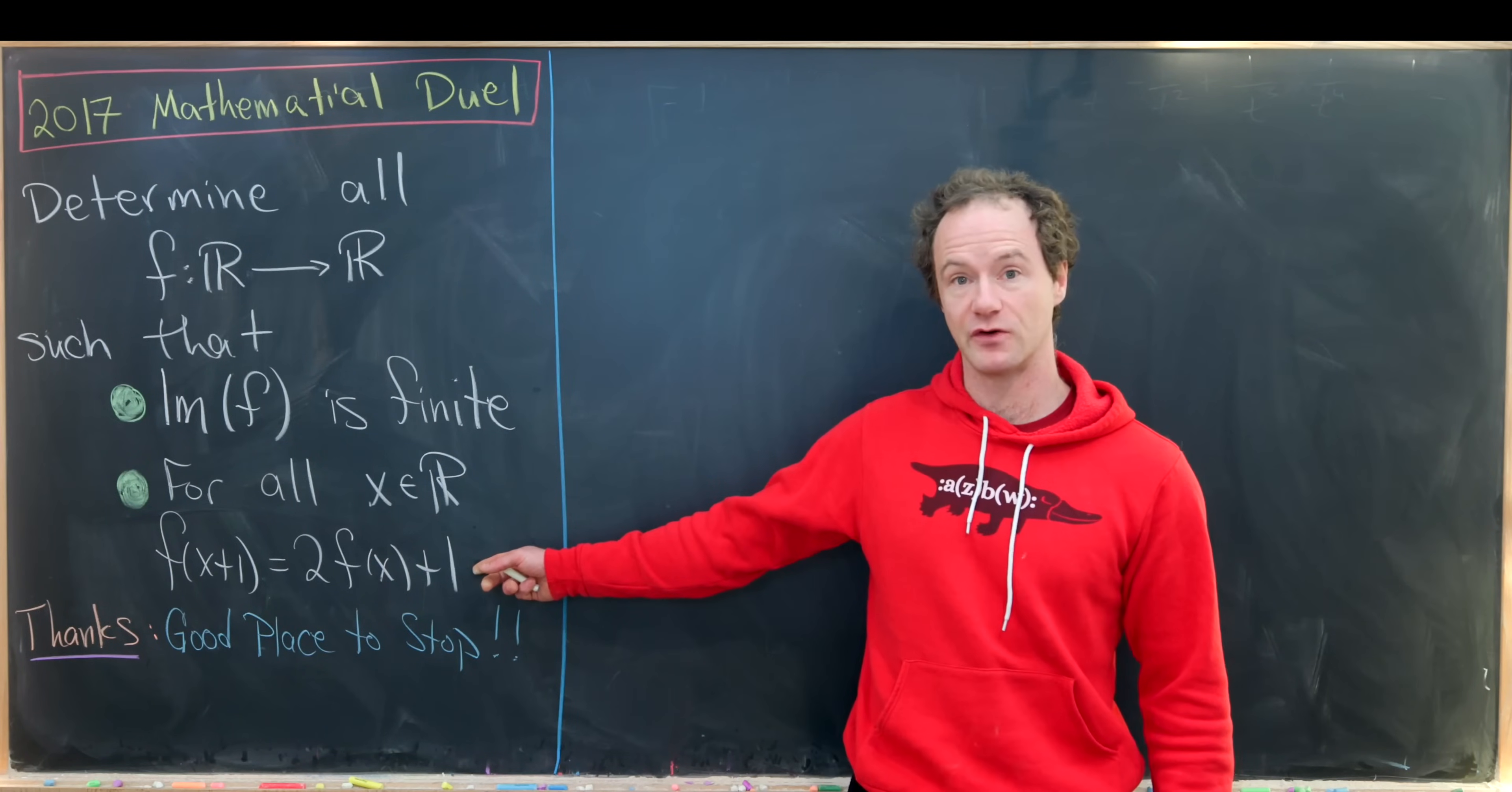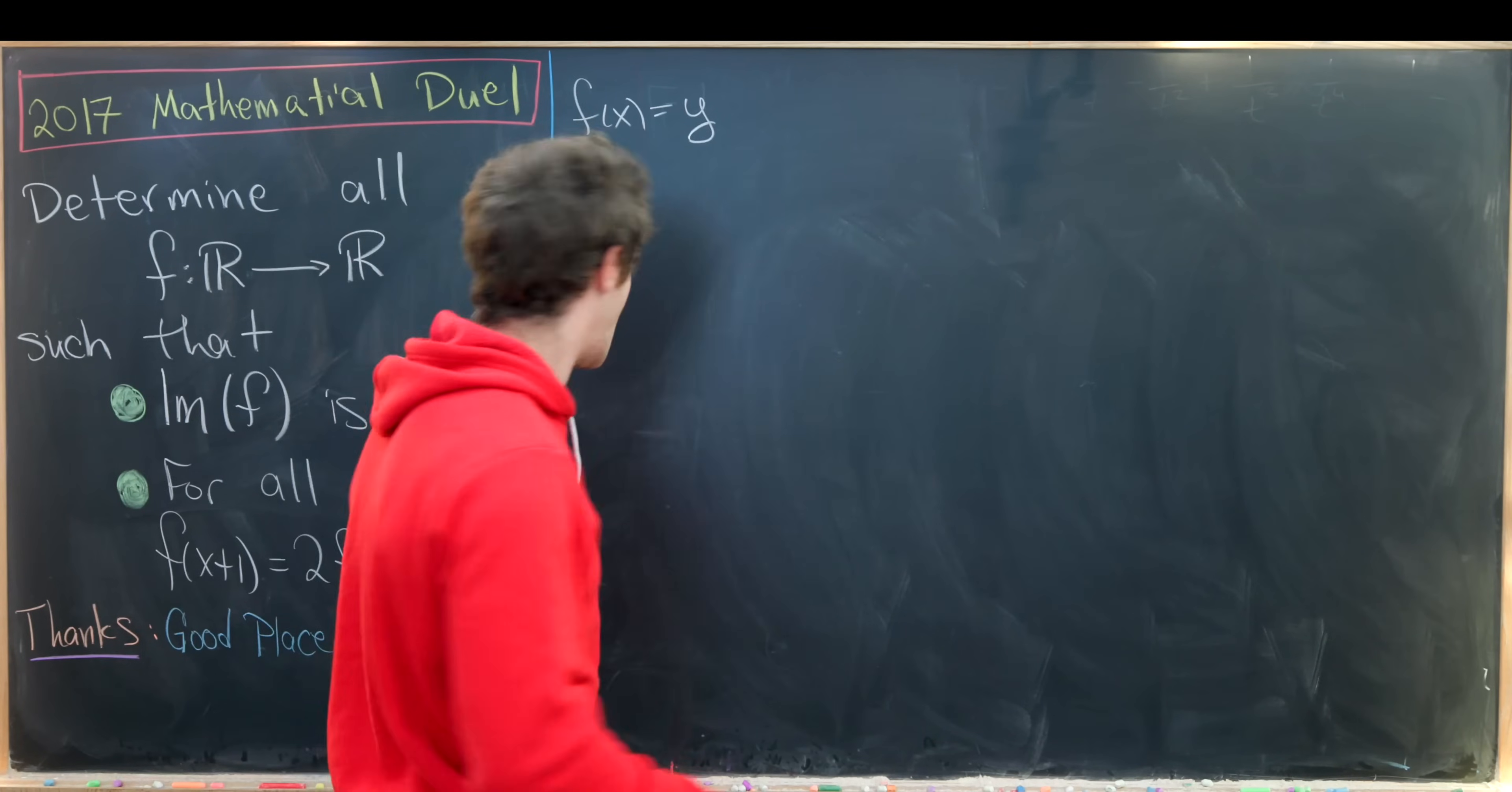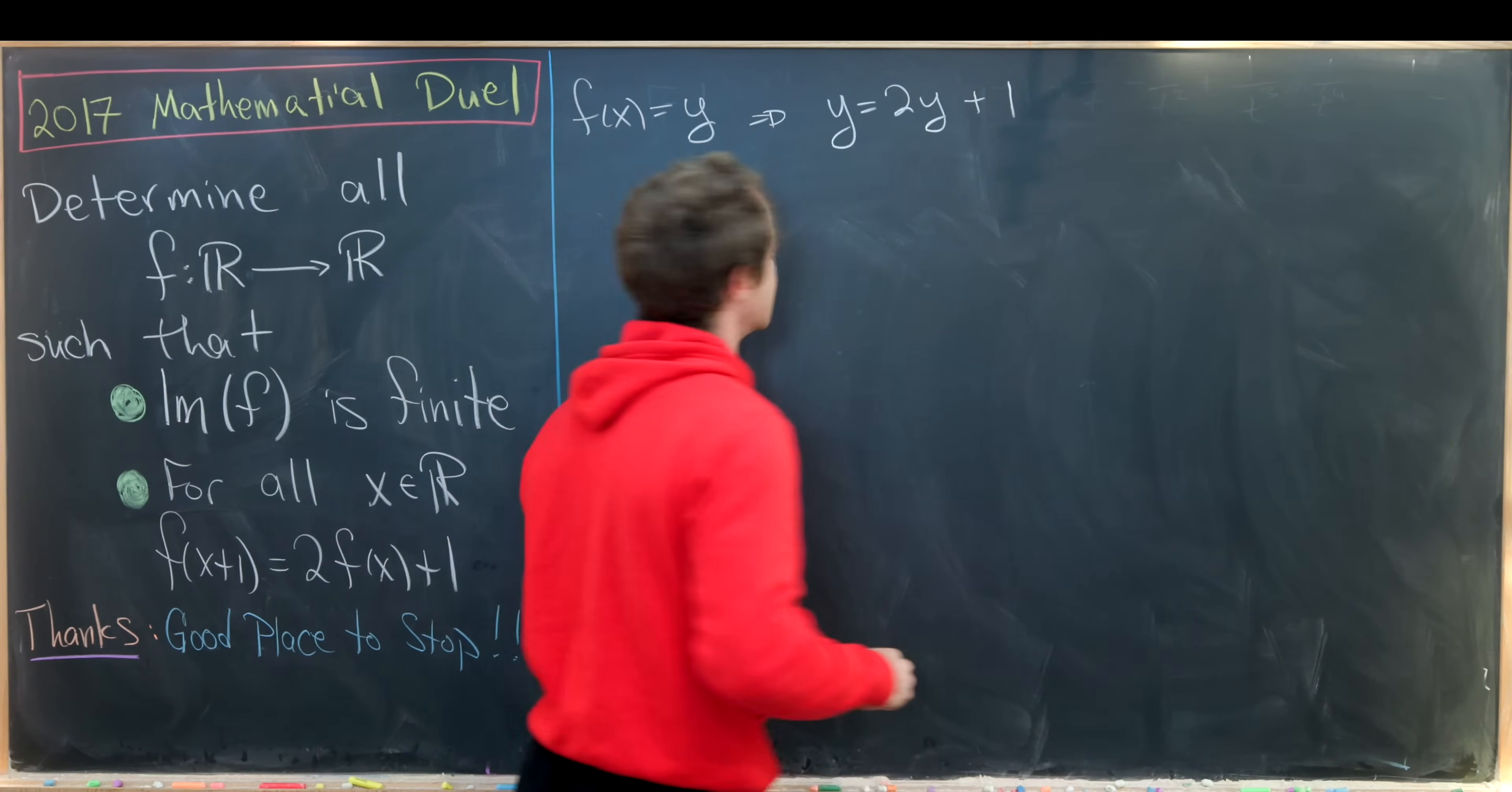an equation for that value right here. Okay, so let's suppose that the image is only one value and that value is y. So that tells us that y equals 2 times y plus 1 after plugging into that equation.